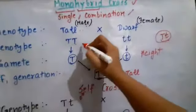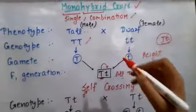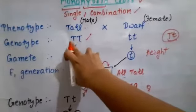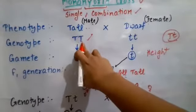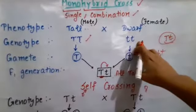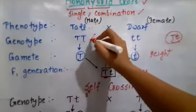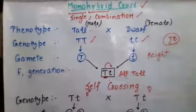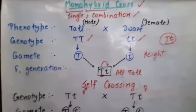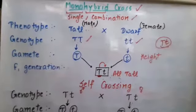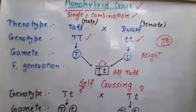Now what is genotype? Genotype is the genetic expression. Here you can see homozygous — capital T, capital T is there, and small t, small t is there. That means we have chosen the homozygous individuals. So what are we going to study in this cross? We have taken one character.